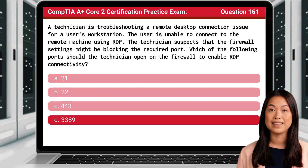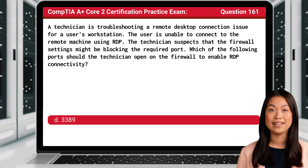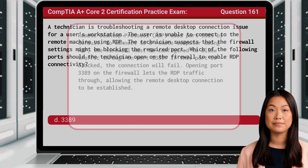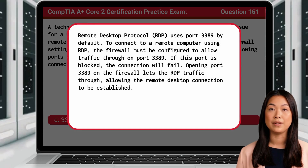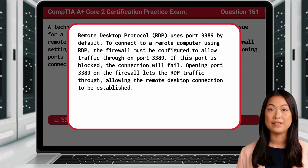The answer is D: 3389. Remote Desktop Protocol uses port 3389 by default. To connect to a remote computer using RDP, the firewall must be configured to allow traffic through on port 3389. If this port is blocked, the connection will fail. Opening port 3389 on the firewall lets the RDP traffic through, allowing the remote desktop connection to be established.